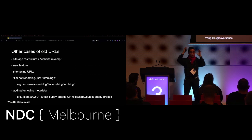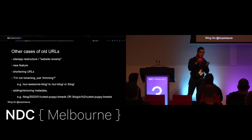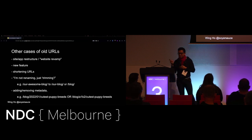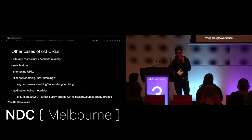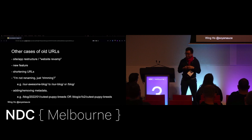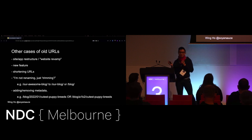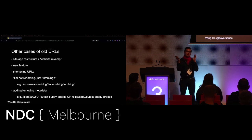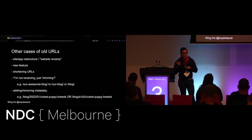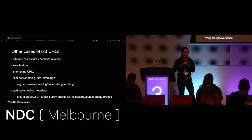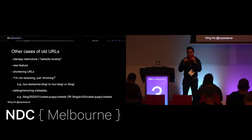There are a whole bunch of other use cases for needing to change your URLs. You could be going through a website revamp or app restructure. You might be building a new feature, or shortening URLs. You might say I'm not renaming anything, I'm just trimming it — so from 'our-awesome-blog' to just 'blog', that's still a new URL and your computer is not going to magically know where the new thing is. You might also be adding or removing metadata in your URLs, like the year and month in your blog path.